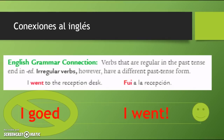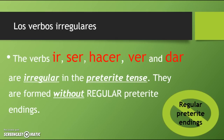I would say 'fui a la recepción.' It doesn't follow the normal drop-the-ending and add-your-new-ending pattern. Similar to that concept in español, we have el pretérito irregular. In this video, we're going to focus on five irregular verbs that have some connections. This is more of an introduction to the various irregular categories within the preterite tense. The verbs ir, ser, hacer, ver, and dar are all irregular in the preterite, and they are formed without our regular preterite endings from the previous video.